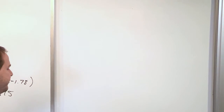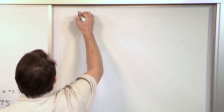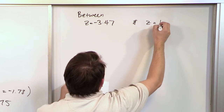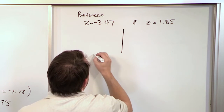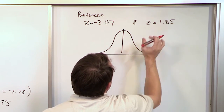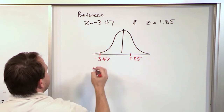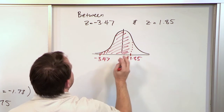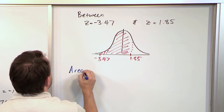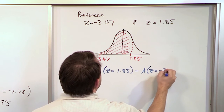Don't stress too much about the direction of subtraction — if you do it backwards, you'll know right away. Now we want to find the area between z = -3.47 and z = 1.85. Drawing a picture: positive 1.85 is somewhere to the right, and negative 3.47 is way off to the left. I'm trying to find the surface area between these two values, which should be a fairly large number.